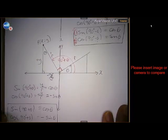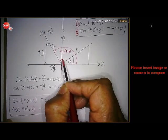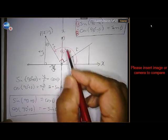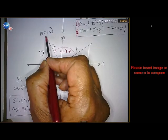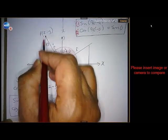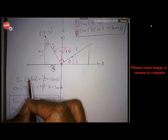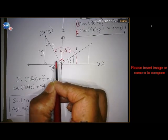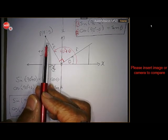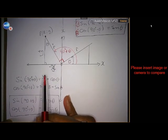Now let's look at 90 plus theta. If this angle is theta and this is 90, then the whole angle is 90 plus theta. If this is point P, then x is negative — we're on the negative arm of the x-axis — y is positive, and r is still positive. The sine of 90 plus theta is opposite over hypotenuse, so it's y over r, which is the cosine of theta.